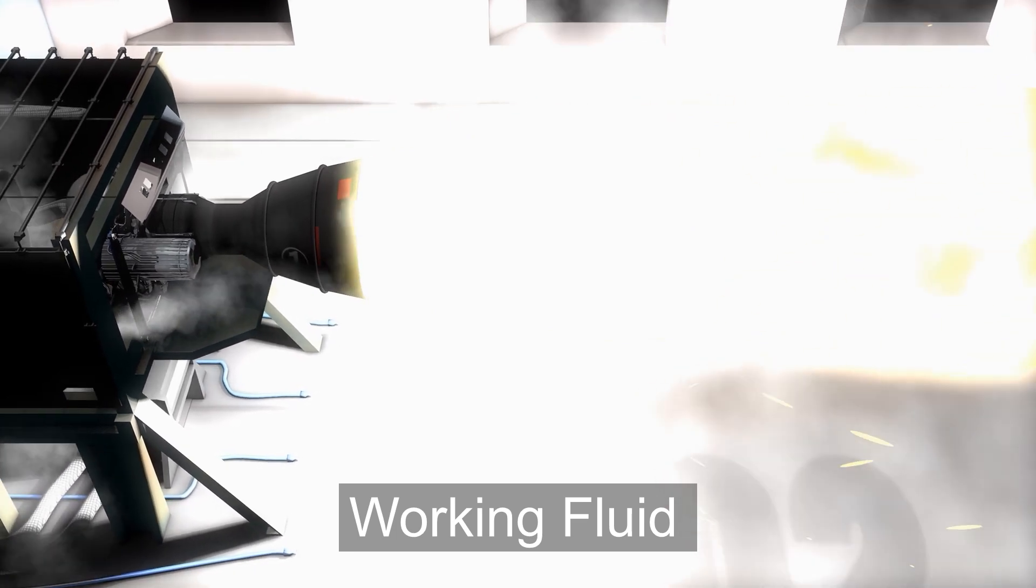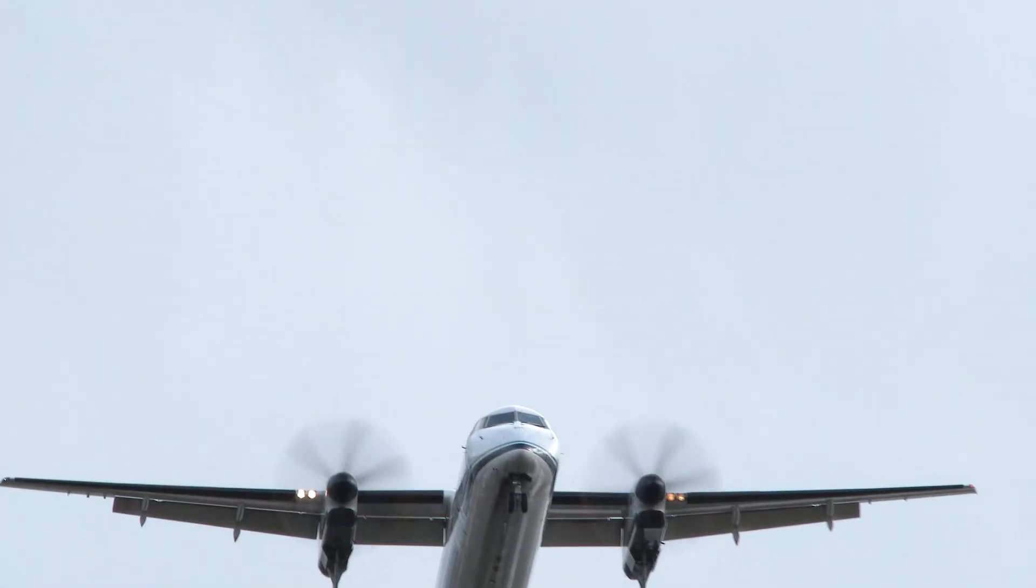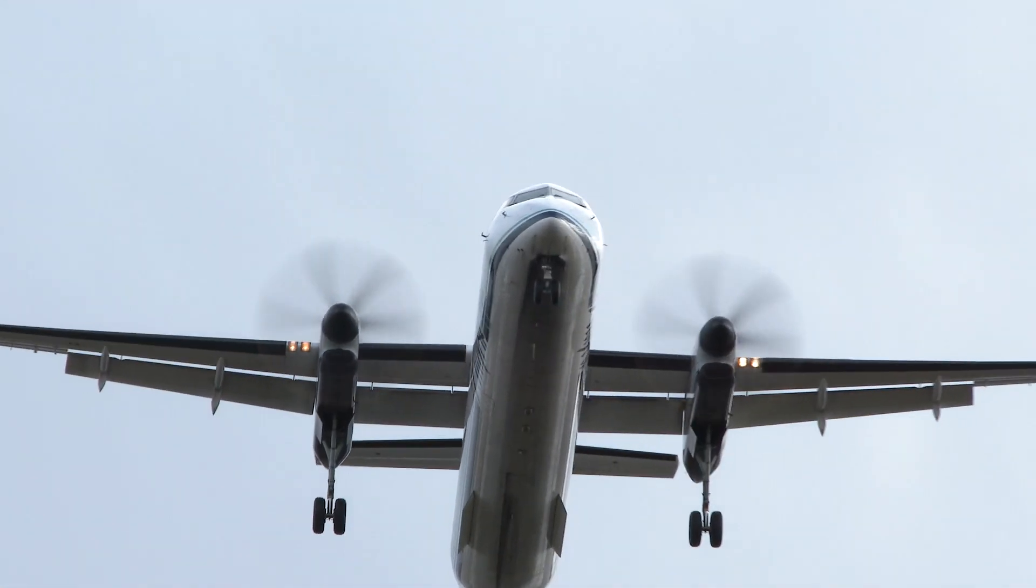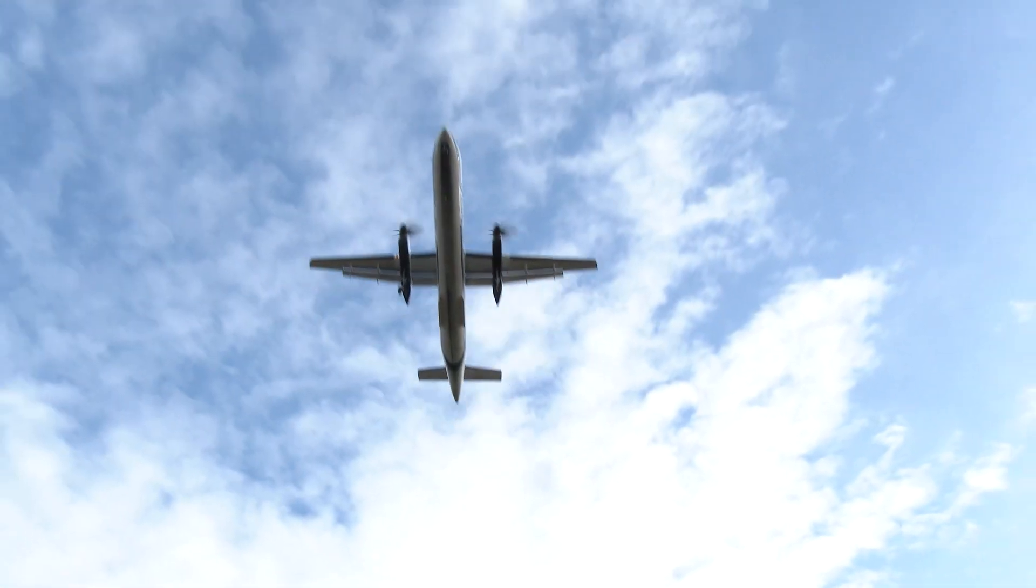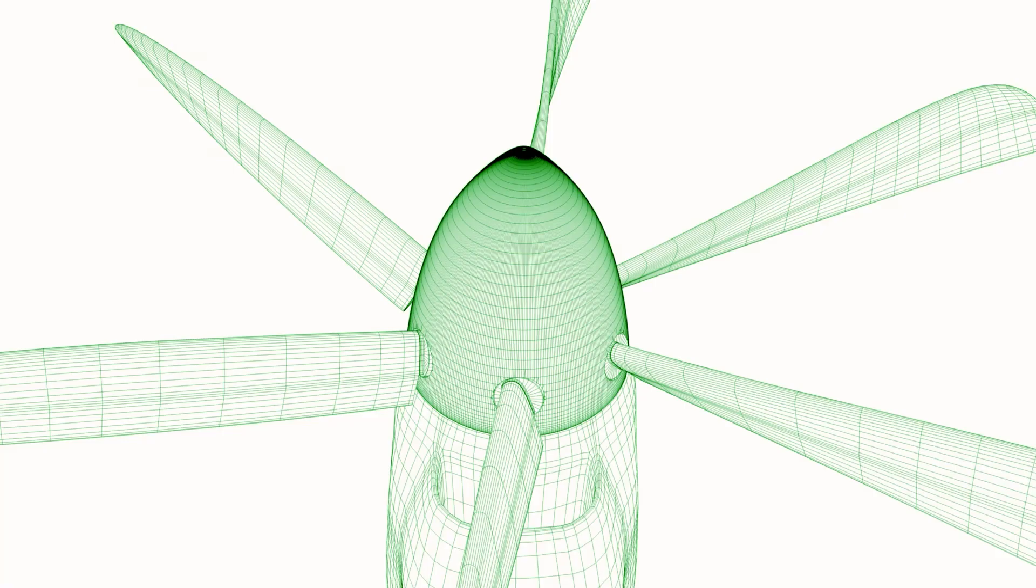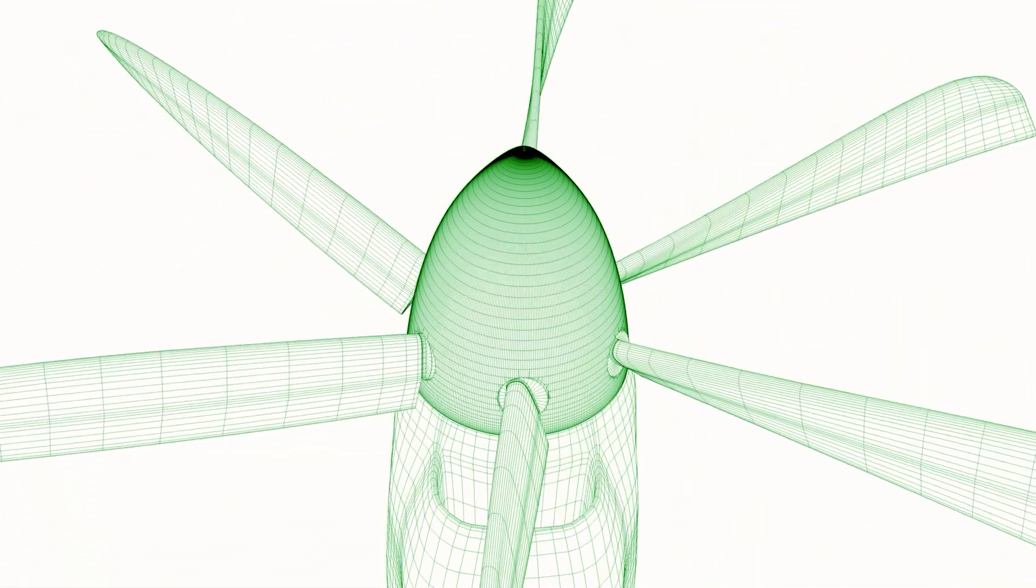Now let's take an example of a propeller plane. In this case the working fluid is the air and we don't have to carry that. It's all around us in the atmosphere. So the propellers move and push the air creating a thrust that makes us move forward.